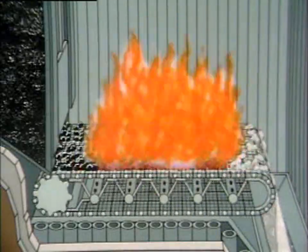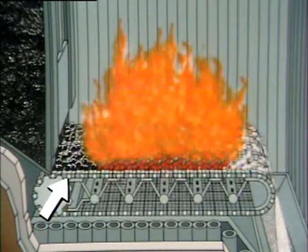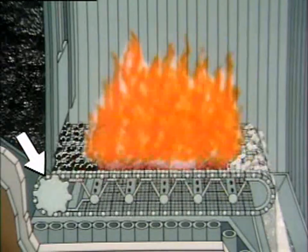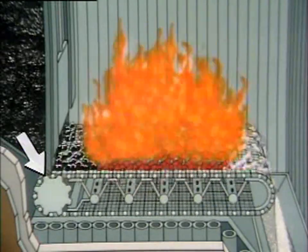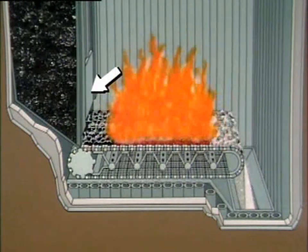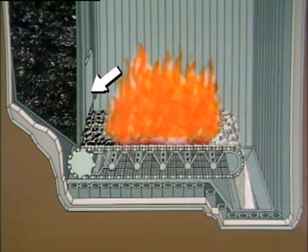Some boilers are designed to burn solid lumps of coal. A device that supplies and burns lumps of coal is called a stoker. Stokers can also burn wood chips or other solid fuels. This stoker has a series of grates to hold the coal, and a drive mechanism moves the grates through the combustion area. The coal is stored in a hopper, and a gate controls the amount of coal fed to the grates.